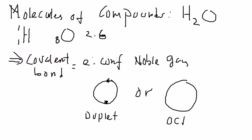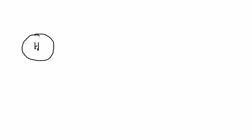So let's go back to H₂O. For covalent bonding, we only show the outermost layer. Hydrogen has one electron at the outermost layer. Plus one oxygen atom.